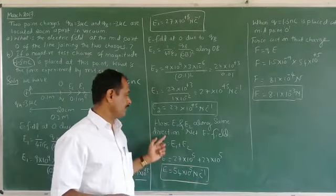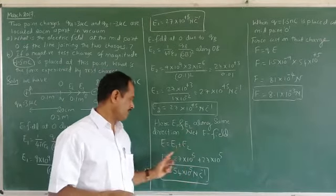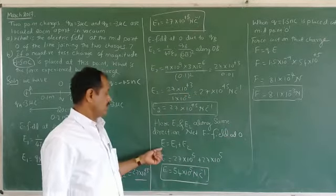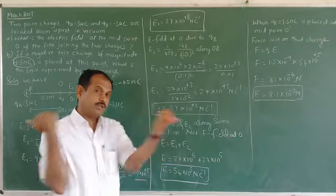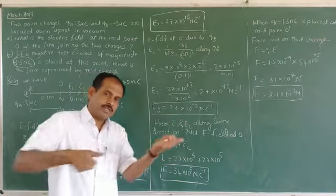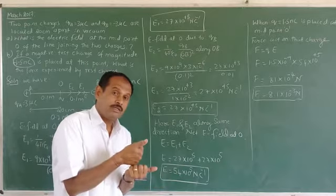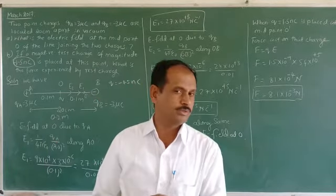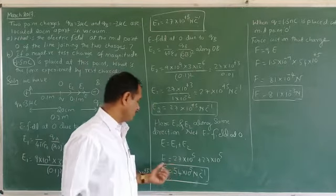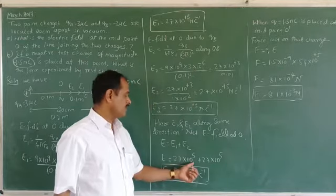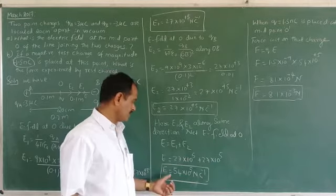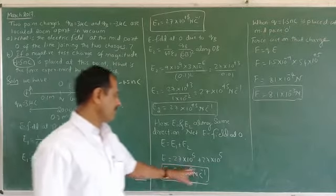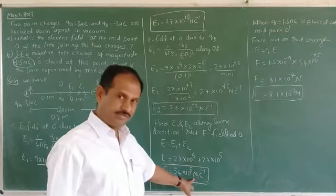Now, E1 and E2 are along the same direction. The net electric field at O: E = E1 + E2, because they are in the same direction. Therefore E = 27×10⁵ + 27×10⁵ = 54×10⁵ N/C. This is the net electric field at the midpoint.